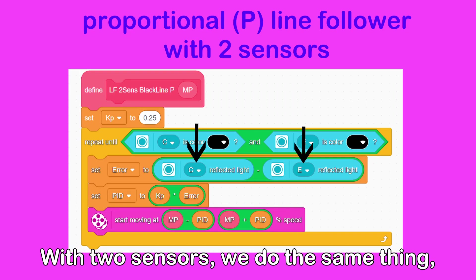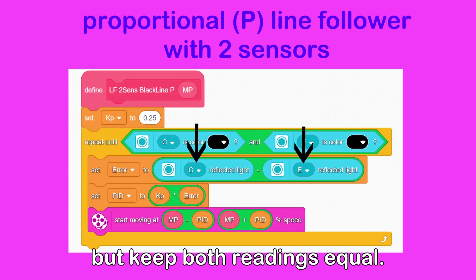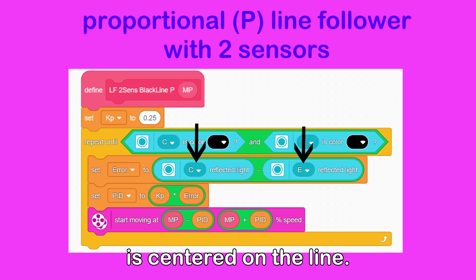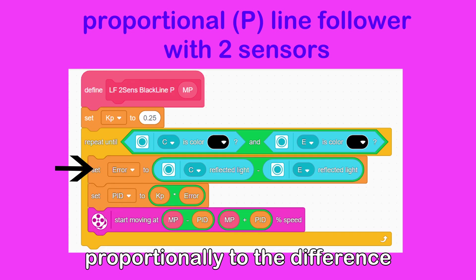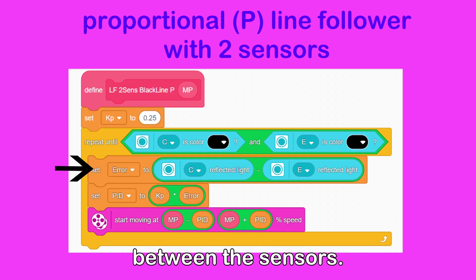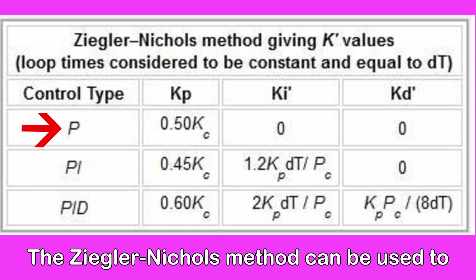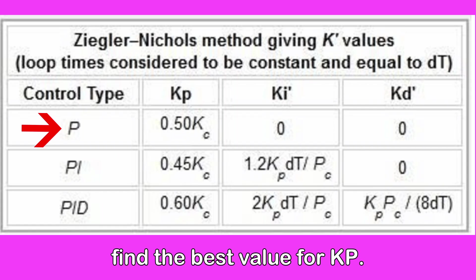With two sensors, we do the same thing, but keep both readings equal. That means the robot is centered on the line. Again, we speed up one motor and slow down the other, proportionally to the difference between the sensors. The Ziegler-Nichols method can be used to find the best value for KP.